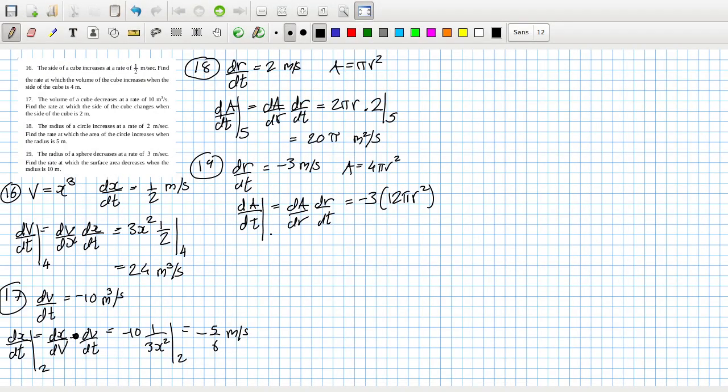And this one here is at 10, so that's at 10. So that's 10 squared, which is 100, times 12, which is 1200, times 3, so that's 3,600, minus 3,600 pi metres squared per second.